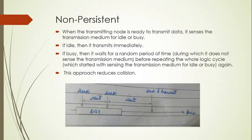The second is non-persistent. In the non-persistent method, a station that has a frame to send senses the line. If the line is idle, it sends immediately. If the line is not idle, it waits a random amount of time and then senses the line again.